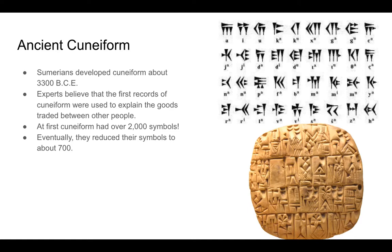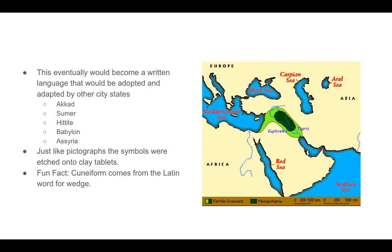At first, cuneiform had over 2,000 symbols, and scribes had to learn and memorize all of them. Eventually they reduced that number to about 700, which is still pretty high. When we break it down, think about our own written language — we've memorized a lot of words already. Eventually cuneiform would become a written language adopted and adapted by other city-states and civilizations, which we will get into in the next chapter.